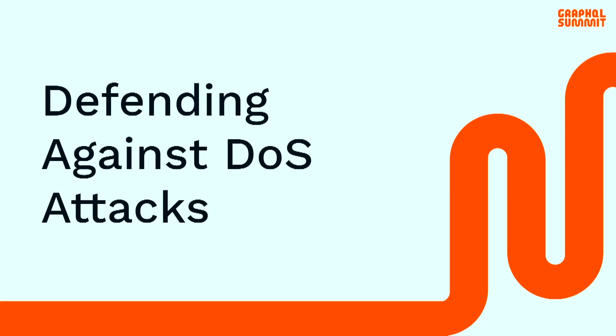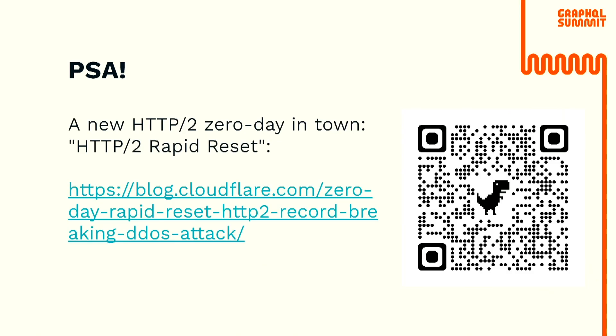Denial of service as a first practical thing. And before I start, there's a public service announcement: yesterday, Cloudflare, Google, and Amazon published information about a zero day — an attack that has just been disclosed. It's a really powerful way to DDoS, to run a denial of service against your servers. This is something your security team and DevOps should address. So if you're using HTTP/2, which probably everybody is, unless someone else is taking care of it, you should take a look at this.